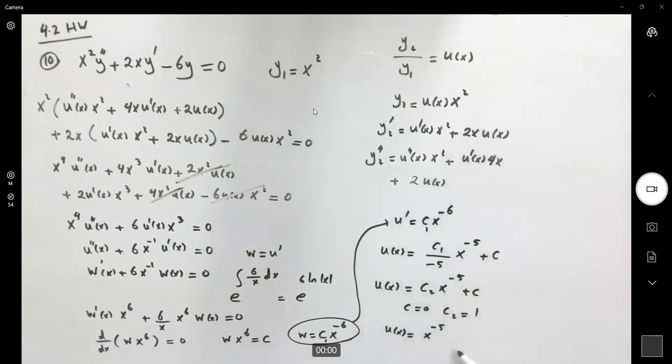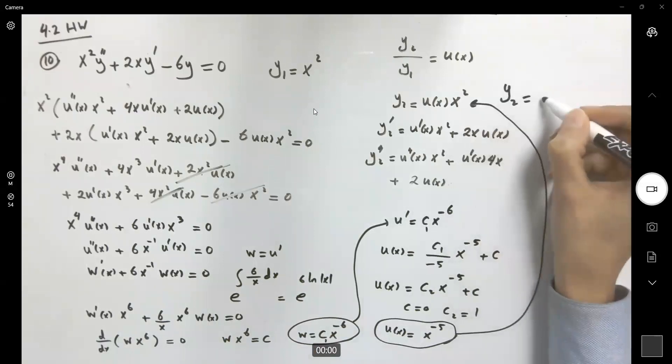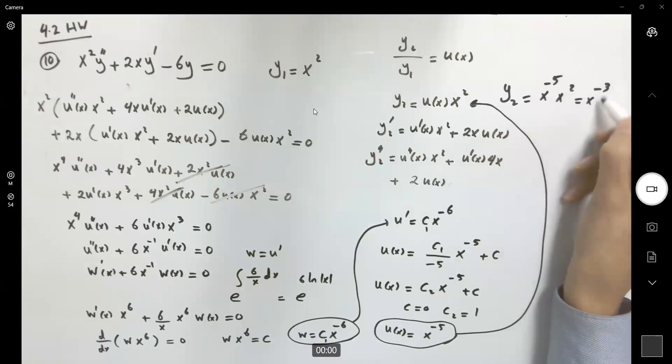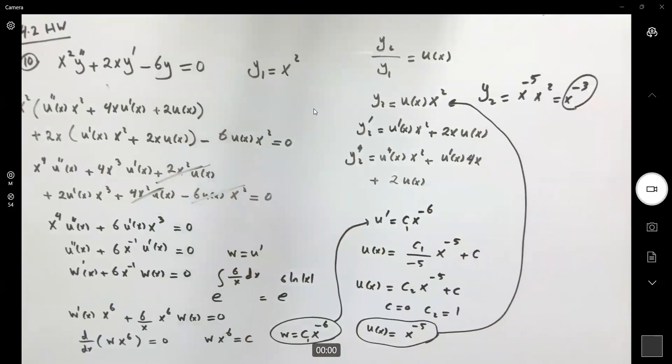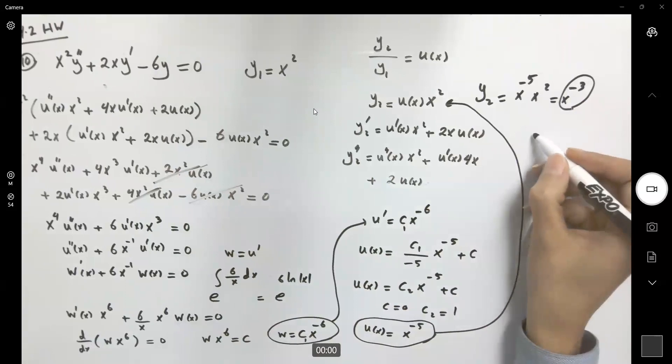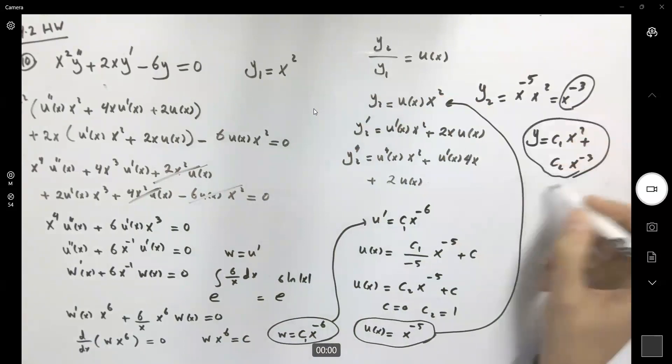Very well. So going back to y2. y2 becomes x to negative five times x squared, or x to negative three. This is the second solution of this differential equation. It means that the general solution can be written as y equals to c1 times x squared plus c2 times x to negative three. General solution.